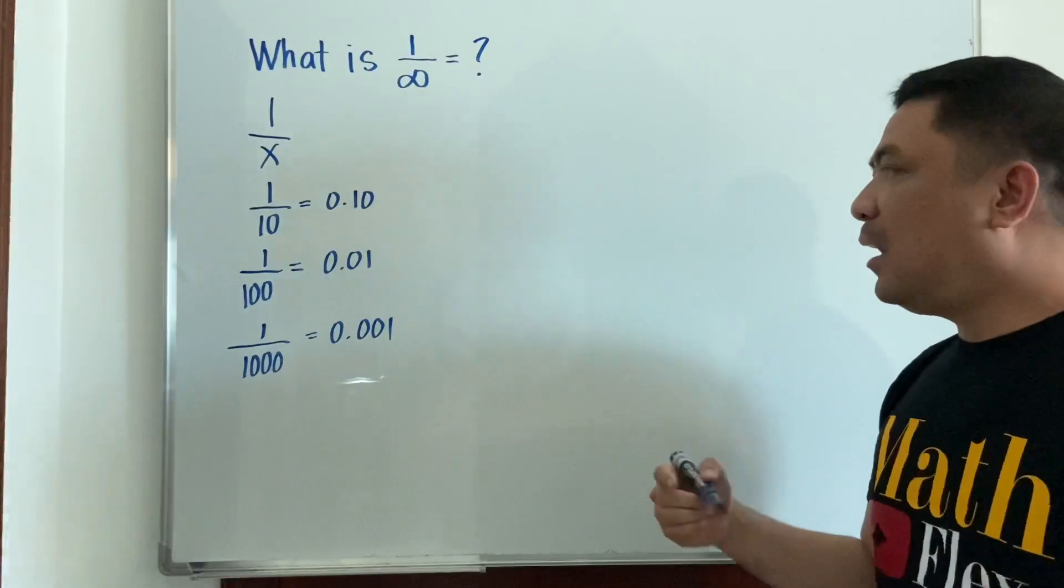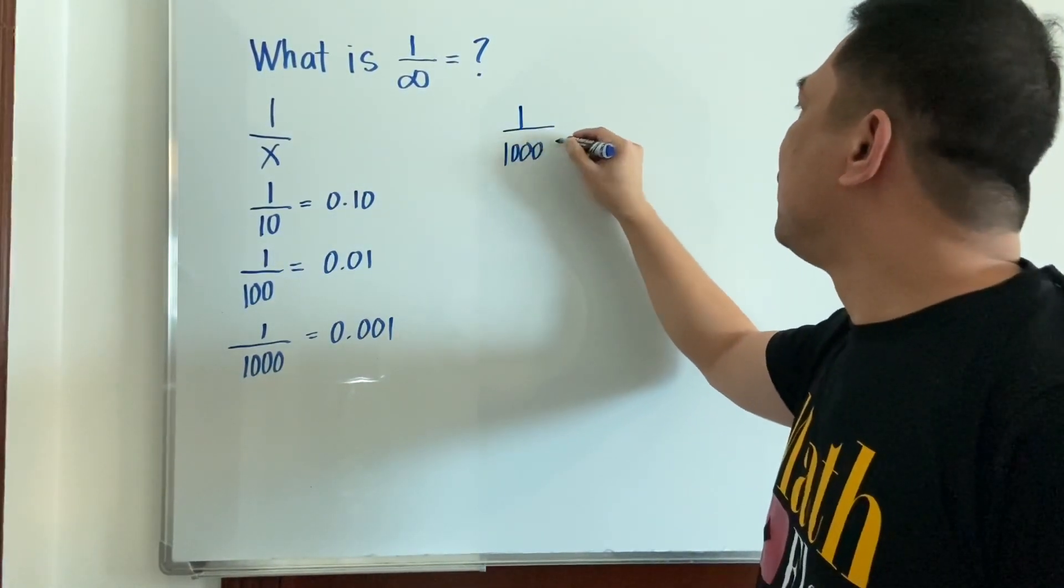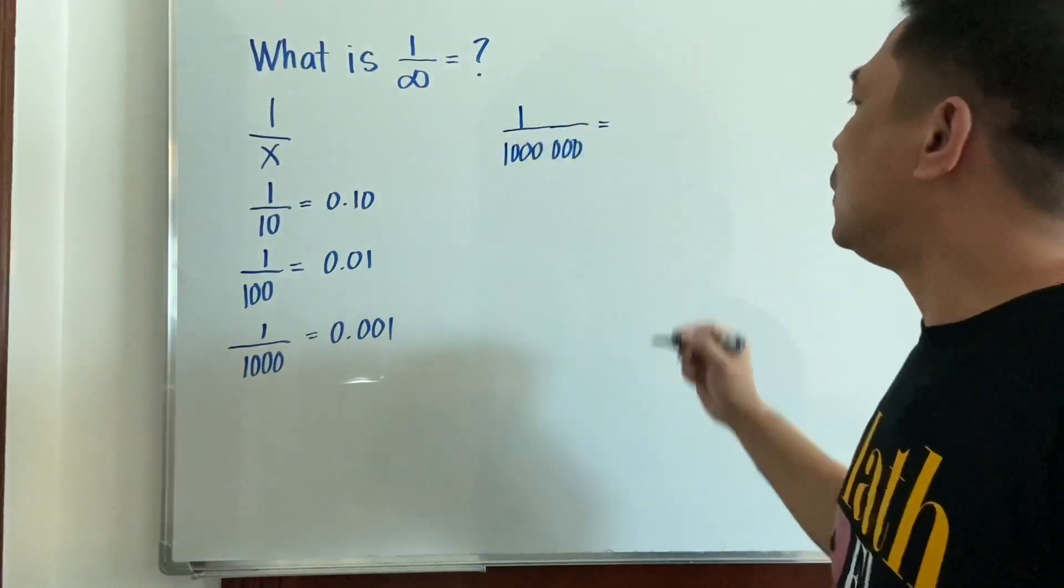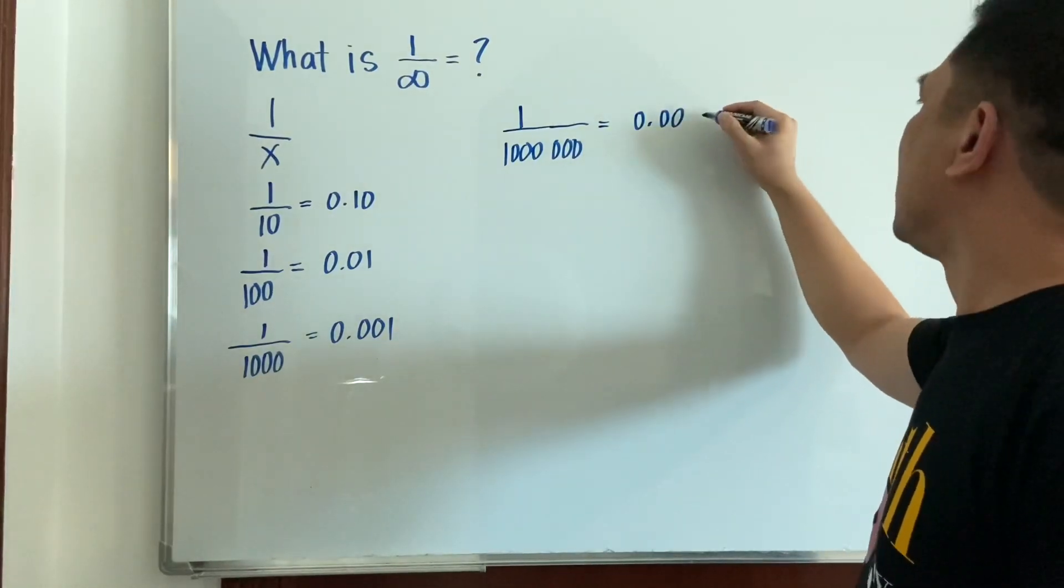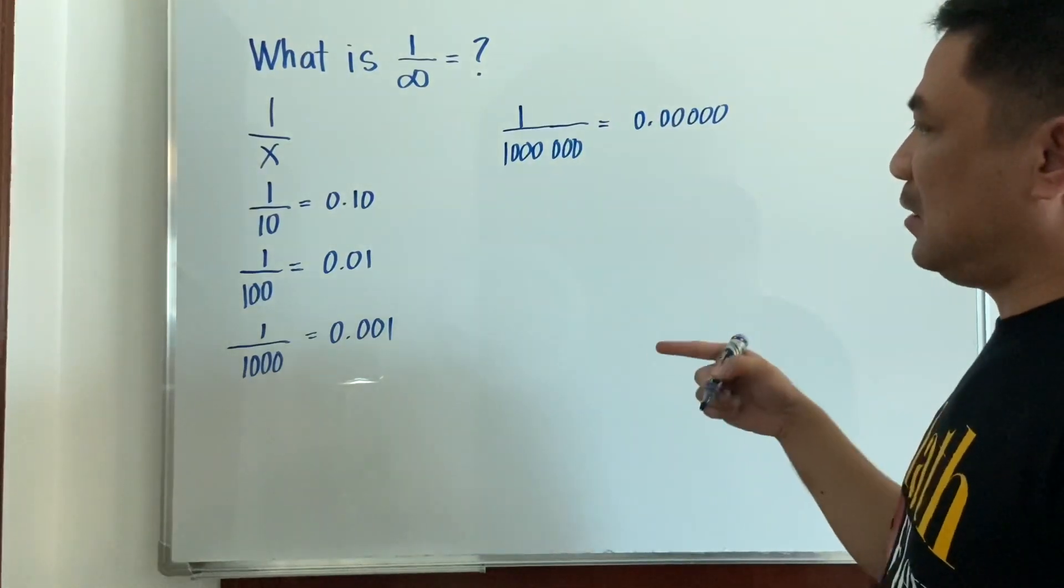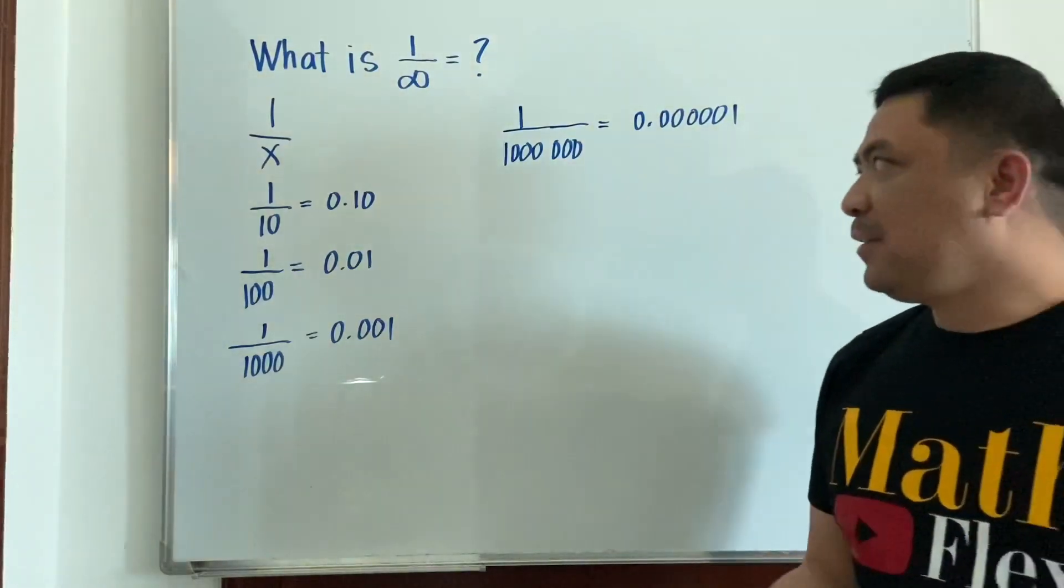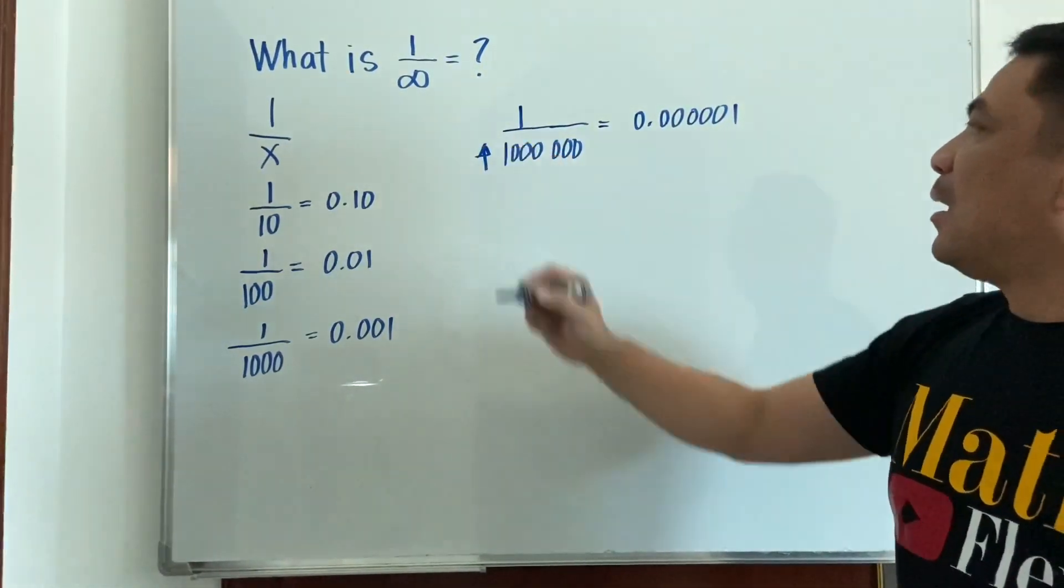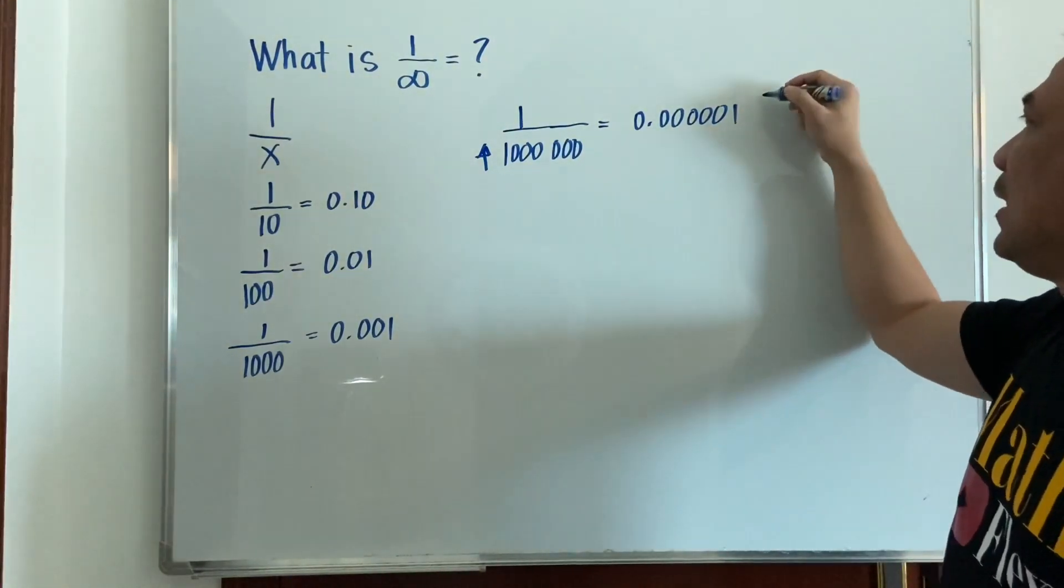Then again, as you try to increase the denominator more, 1 over, say, 1 million—this will be equal to 0.000001. That's around five zeros. What have we observed here? That as you increase the denominator, the value of your quotient decreases.